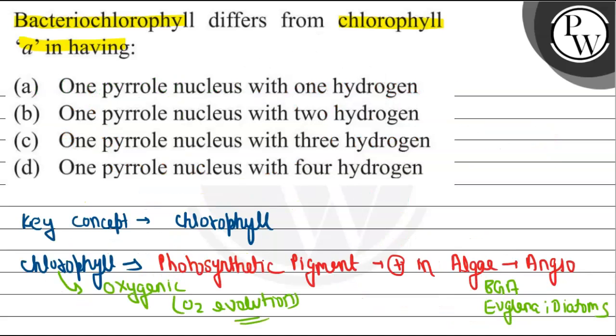So according to this, our answer will be that bacterial chlorophyll differs from chlorophyll A in having one pyrrole ring nucleus with two hydrogen.